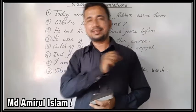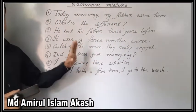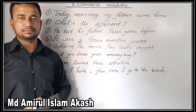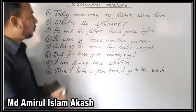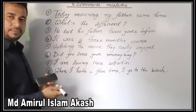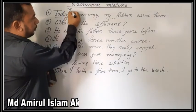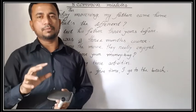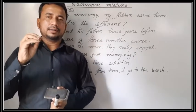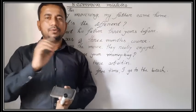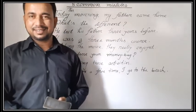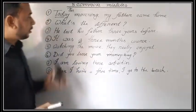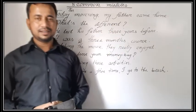I have already written the sentences on the board. Number one: 'Today morning my father came home.' What's wrong with this sentence? Yes, the wrong is 'today.' It will be 'this morning' — 'This morning my father came home' — not 'today morning,' because the morning or evening of the day will be 'this morning' or 'this evening.'